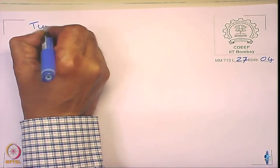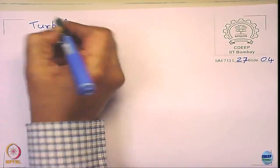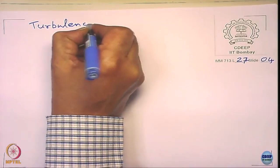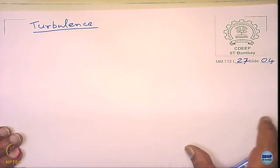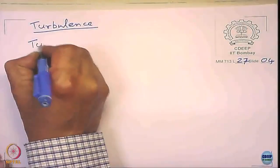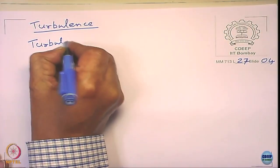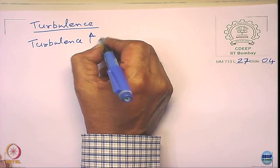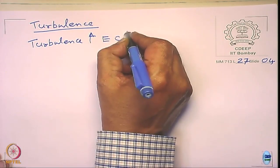The next thing to discuss is turbulence. Turbulence can happen if the surface is not smooth, if there is a change of direction, or if there is a reduction in the diameter of the pipeline. Higher the turbulence, higher is the erosion corrosion.